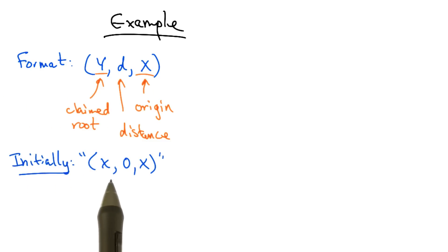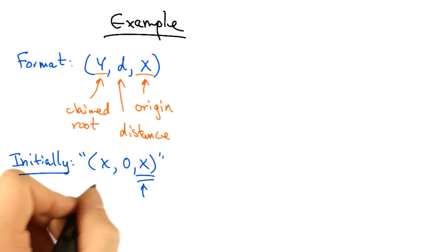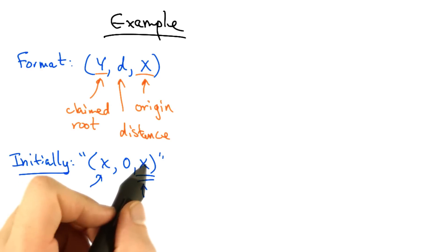Initially, every switch in the network broadcasts a message like X, 0, X to indicate that it thinks itself is the root. When other switches hear this message, they compare the ID of the sender to their own ID and update their opinion of who the root is based on the comparison of these IDs.